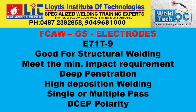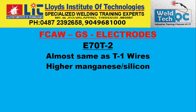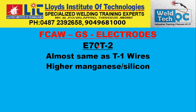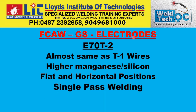Now we will talk about E70T-2. As a reminder, when the position digit is 1 (as in E71T), you can weld all positions; when it is 0 (as in E70T), you can weld only flat and horizontal positions. E70T-2 is almost the same as T-1 wires, except it has higher manganese and silicon content. It is suitable for flat and horizontal positions, single pass welding only, and uses reverse polarity (DCEP).